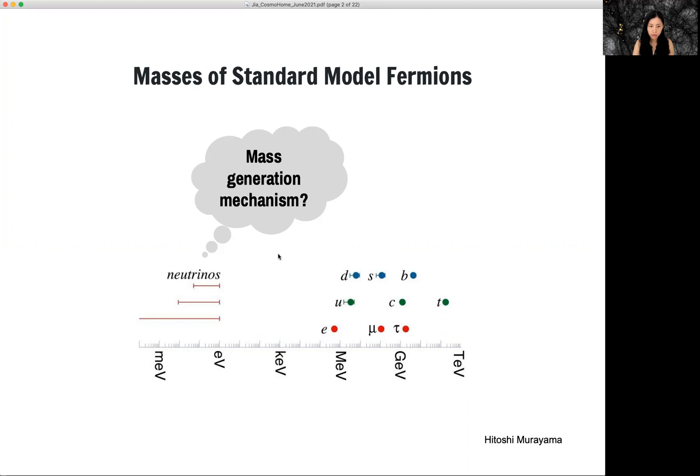So there's six orders of magnitude differences between these two clusters. And that prompts the question, what is the mass generation mechanism for the neutrinos?